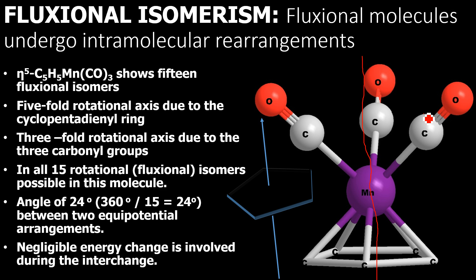If you divide 360 by 15, you will see that at an angle of 24 degrees you will get an equipotential arrangement. So there are 15 fluxional isomers for η⁵-C₅H₅Mn(CO)₃. The angle of rotation required for converting one fluxional isomer into another is just 24 degrees, which is a very small angle. Therefore, a negligible energy change is involved during the interchange from one isomer to another, making it really very difficult to identify or distinguish these isomers.